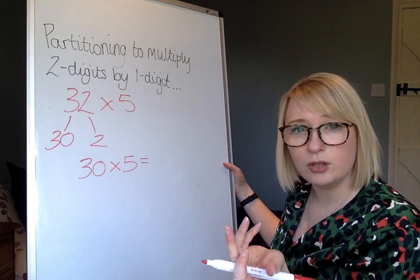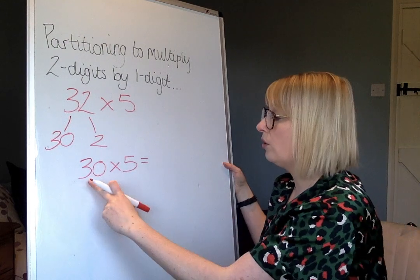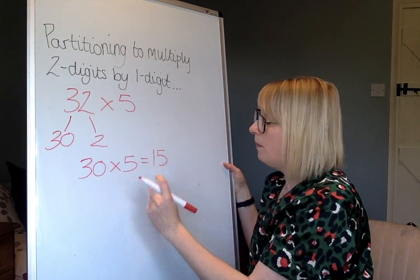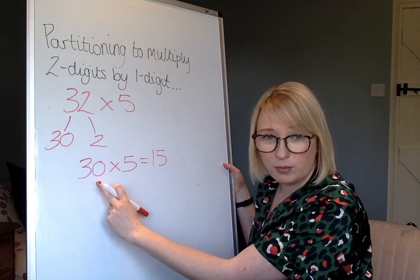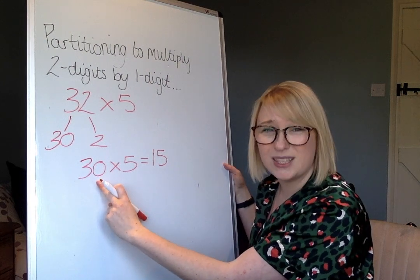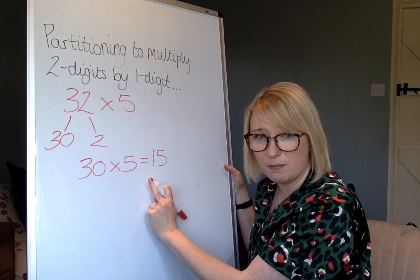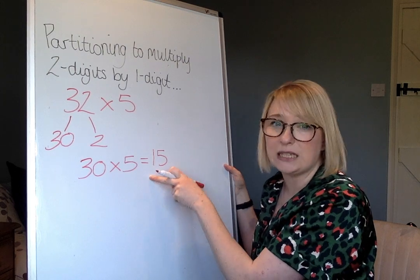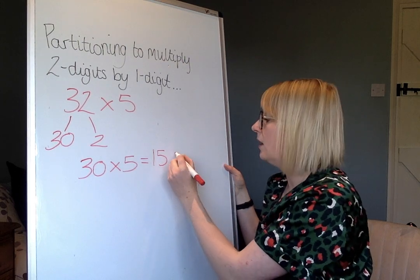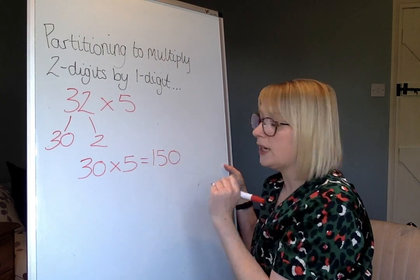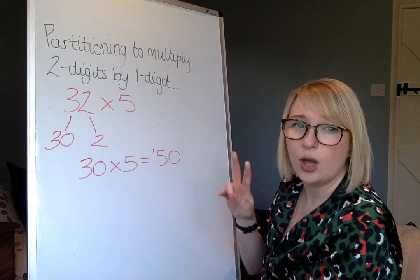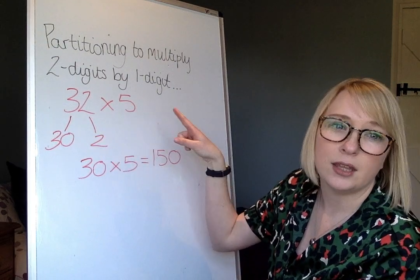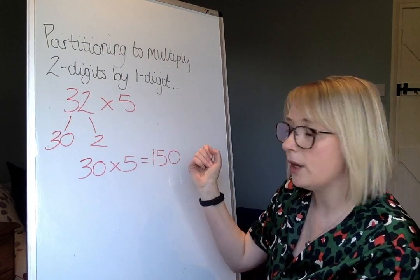Some of you may not be able to do that straight away though, so you could do 3 times 5, which is 15. But the number we were multiplying by was 10 times bigger, so we need to make our answer 10 times bigger, and 15 times 10 is 150. So that was step two: multiply the tens digit by the integer that you're multiplying by.